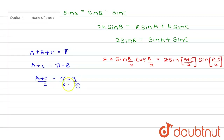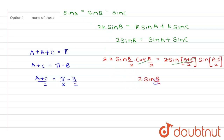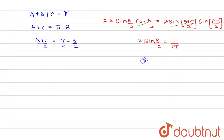Substituting π/2 minus B/2 in place of (A+C)/2, and noting that sin(π/2 minus B/2) equals cos(B/2), the left side becomes 2·sin(B/2)·cos(B/2), which cancels with the cos(B/2) term on the right, leaving 2·sin(B/2) equals 1/√2. Therefore sin(B/2) equals 1/(2√2).